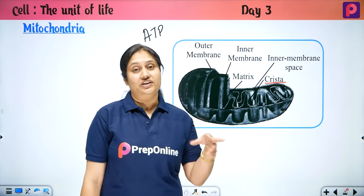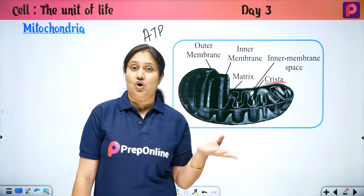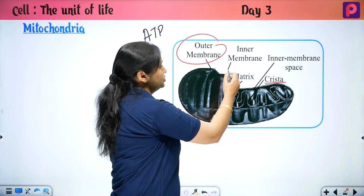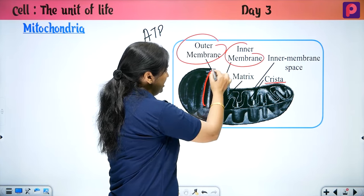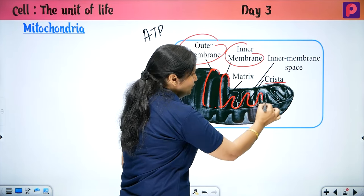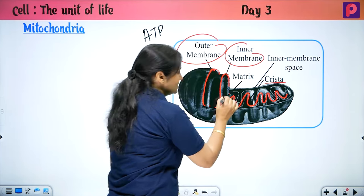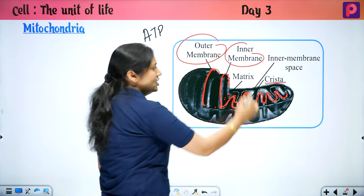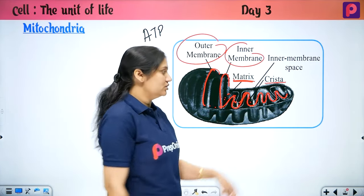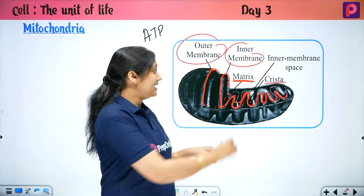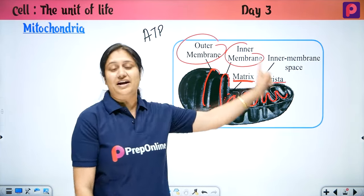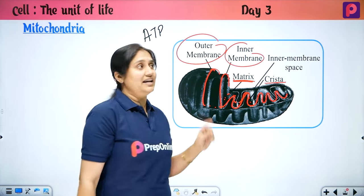Now, the inner membrane also makes it clear which organelle is double membrane-bound. Mitochondria has one outer membrane and one inner membrane. The folds created by the inner membrane are cristae, and the space inside the inner membrane is called the matrix. Between the outer and inner membrane is the perimitochondrial space.